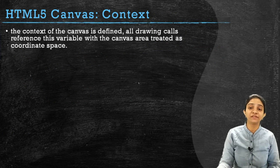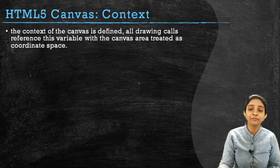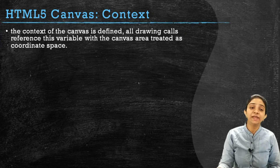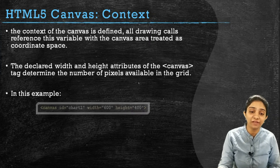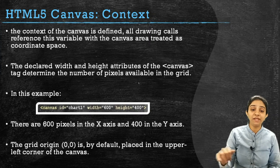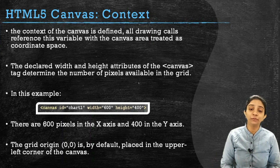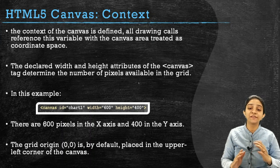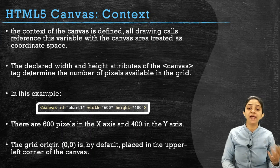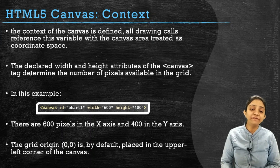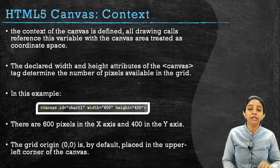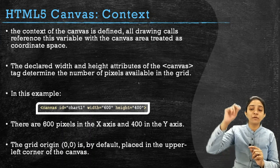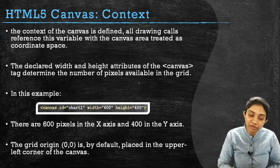Once the context of canvas is defined, all drawing calls referencing this variable within the canvas area will be treated in a coordinate space. Remember, we declared width and height of the canvas as attributes. The canvas is 600 pixels wide and 400 pixels tall, so the complete canvas area is 600 pixels wide and 400 pixels long. That area is reserved for the canvas.